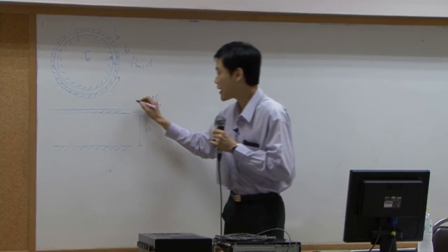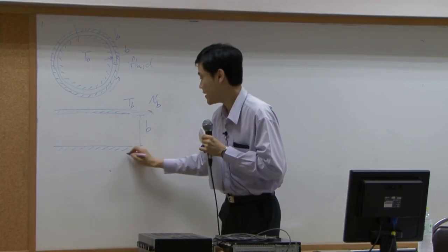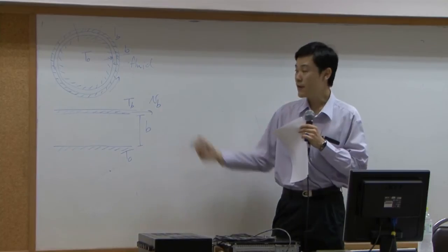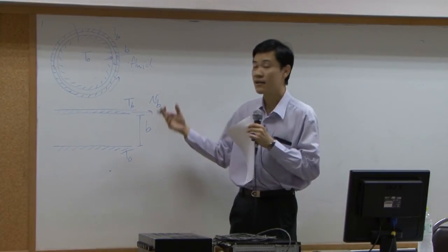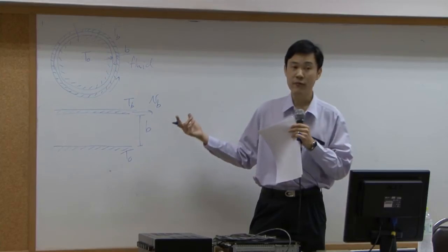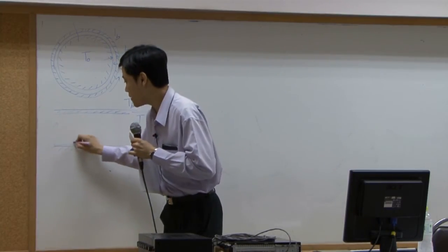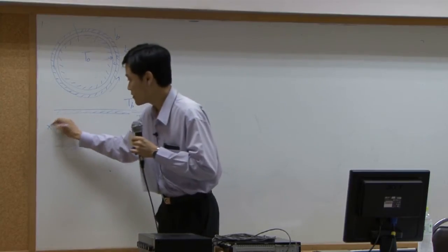Outside, temperature is Tb. Inside, this is temperature T0. So, if you extend it like this, then you can convert cylindrical problem into a rectangular problem. Our coordinate can be represented by Cartesian coordinate xc like this.